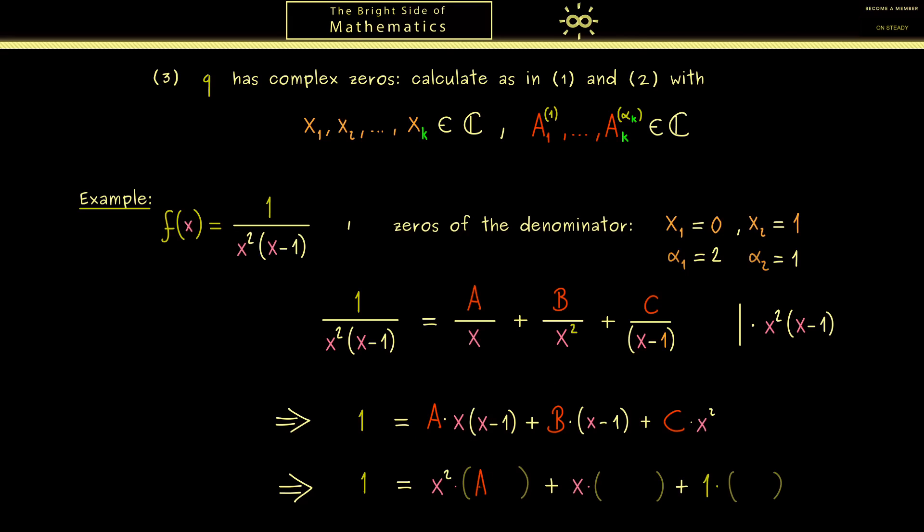And here we get A plus C for x². And minus A plus B for x. And finally just minus B for the factor 1.